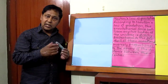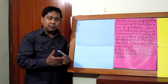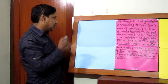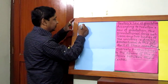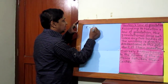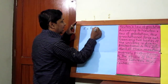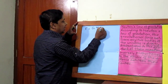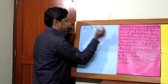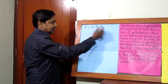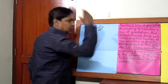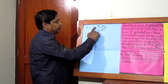Now it's time to derive an equation from Newton's law of gravitation. Look at this equation: F equals G m1 m2 divided by d squared. This is an equation which we can derive from Newton's law of gravitation.